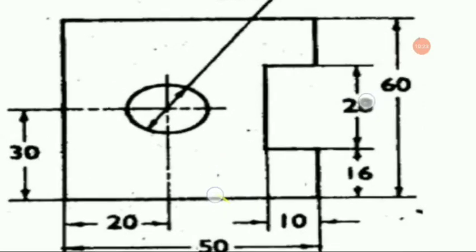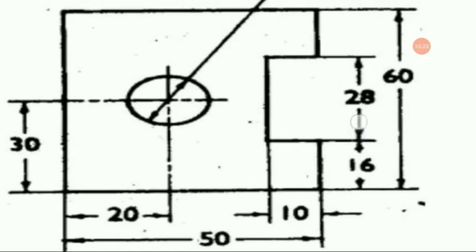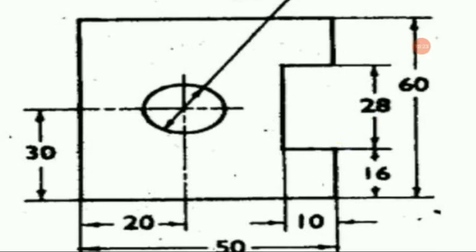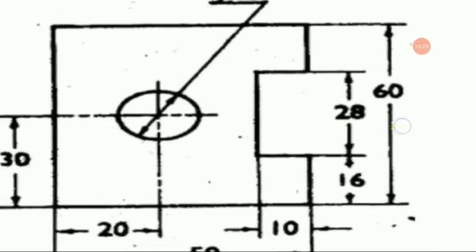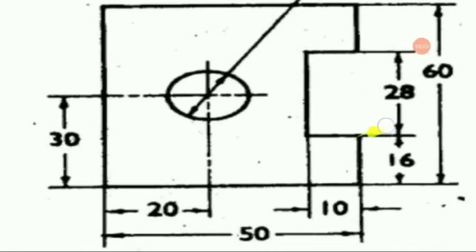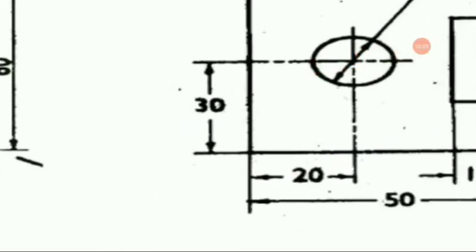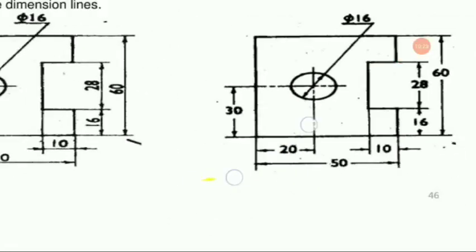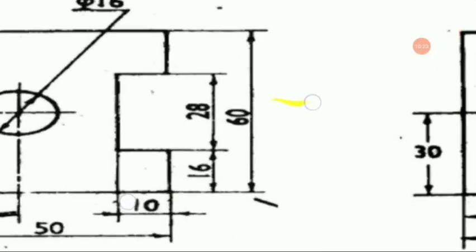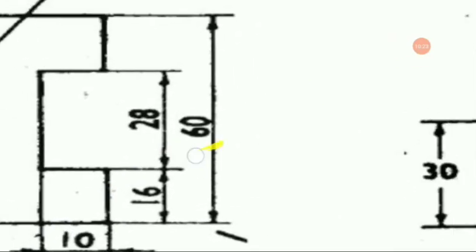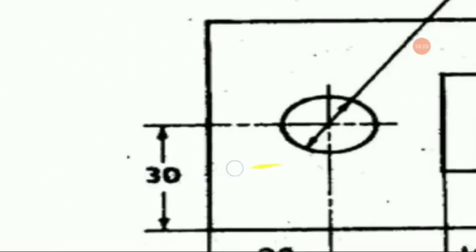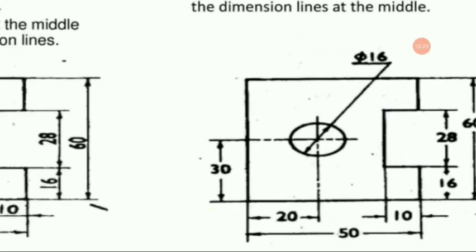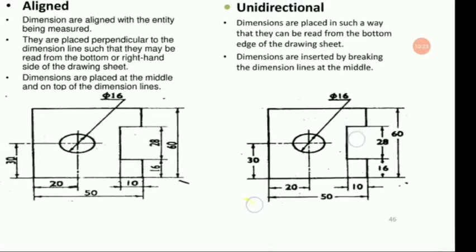In the unidirectional system, the dimension lines are broken at the middle and the measurements are given in the middle of the dimension system. Previously, dimensions were given above the dimension lines, but in the unidirectional system, dimensions are given in between the dimension lines. That is the main difference between the aligned and unidirectional dimensioning systems.